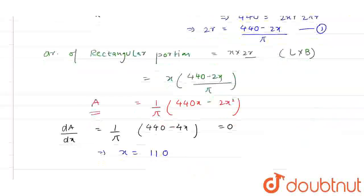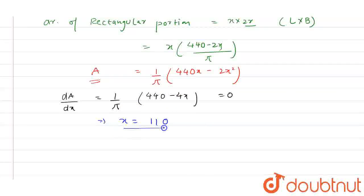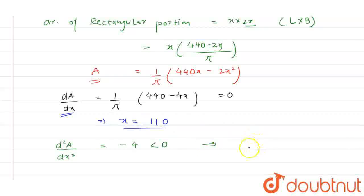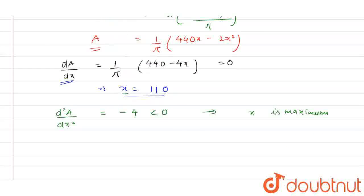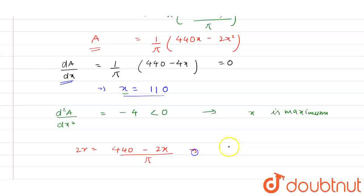Now, to check if this is a maximum or not, we find the double differentiation of A. So d²A/dx² is equal to −4/π, which is less than 0. So we can say that X = 110 gives a maximum. If we put the value of X in equation 1, we get 2R = (440 − 2×110) / (22/7) = 220 / (22/7), which is equal to 70.